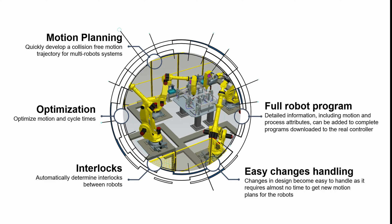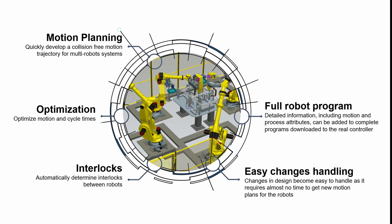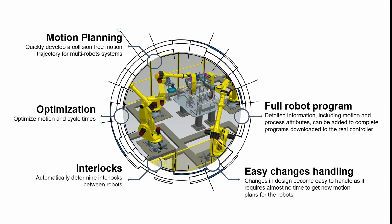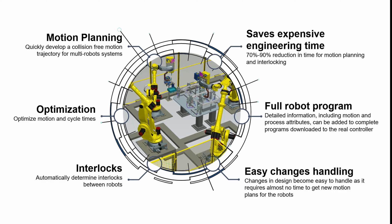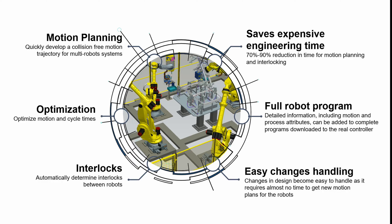For the real robot controller we can output complete programs with detailed information including motion, process attributes and logic. And finally, save up to 70 or 90% of the time spent in motion planning and interlocking.